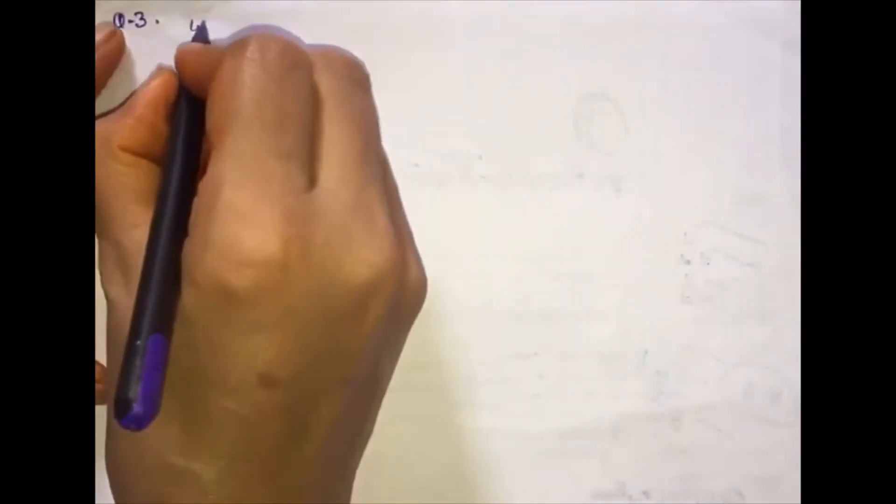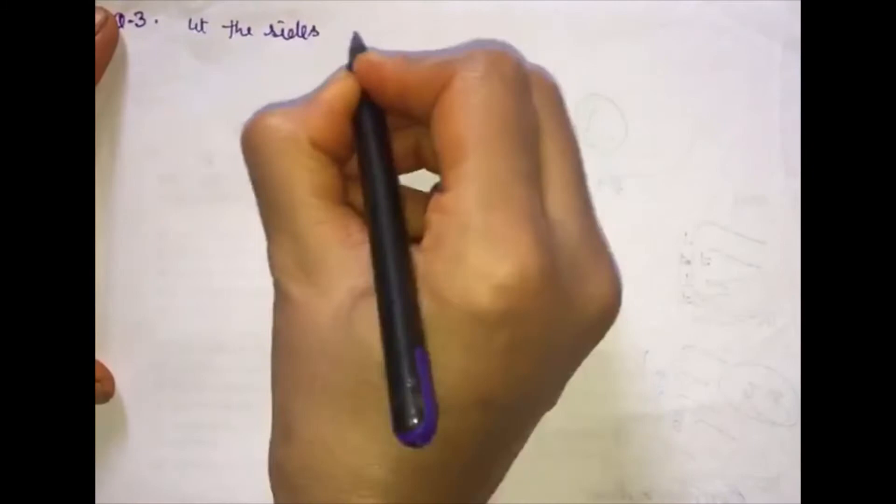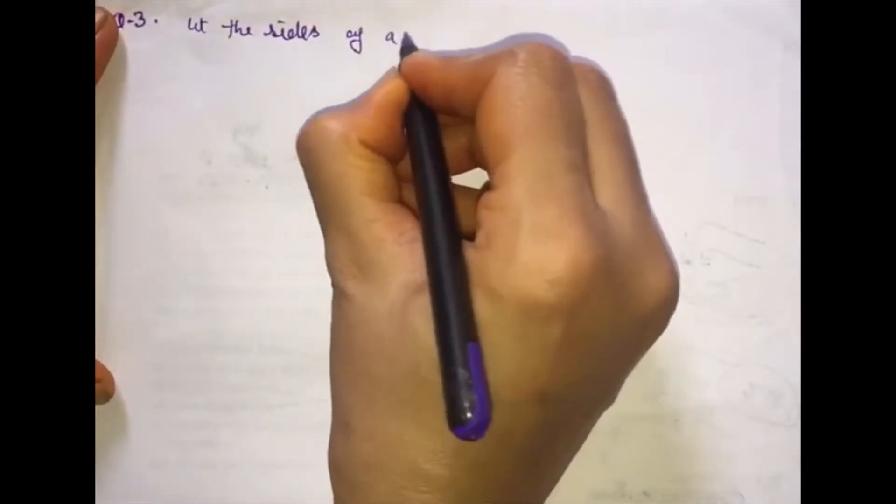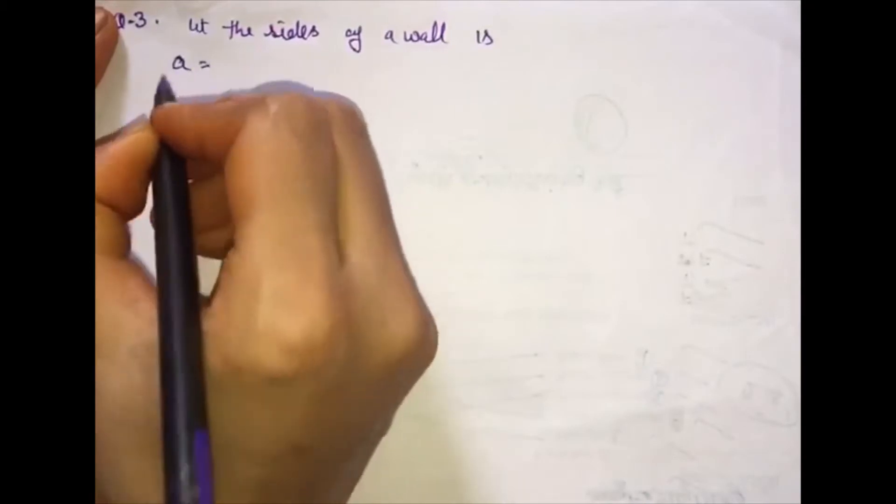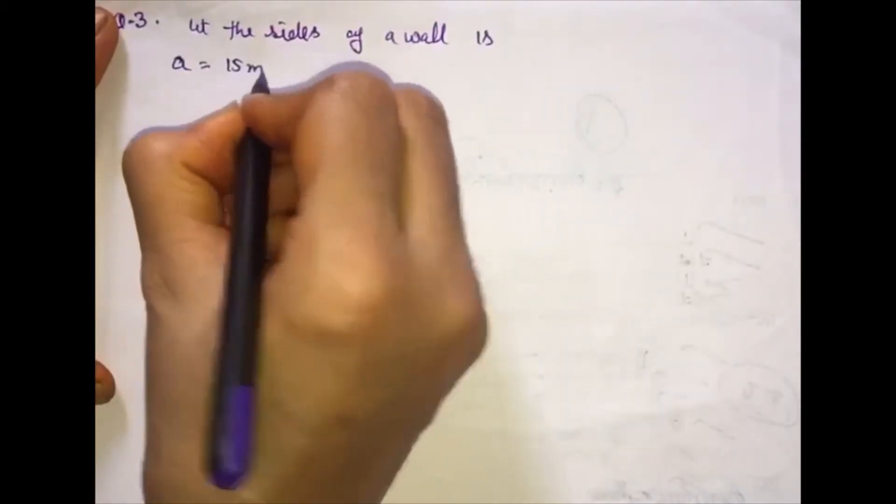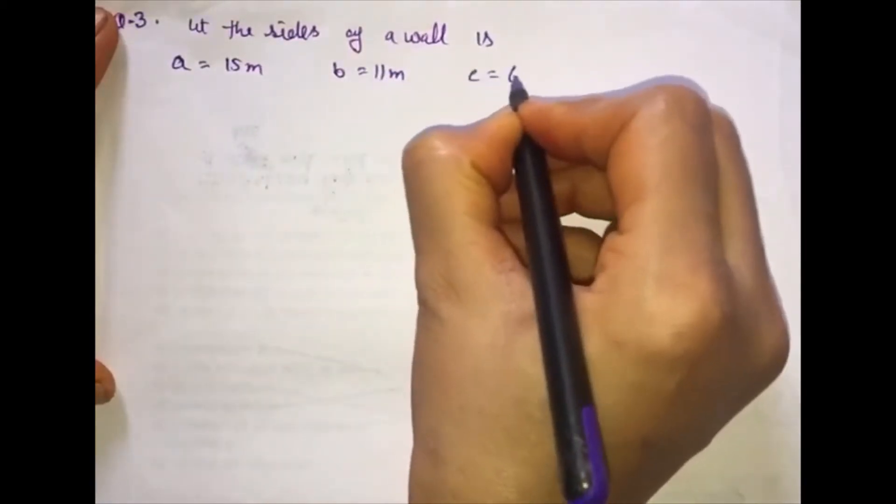Let the sides of a wall be: A is 15 meters, B is 11 meters, and C is 6 meters.